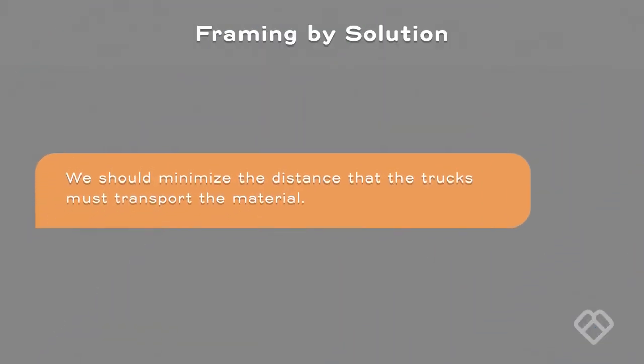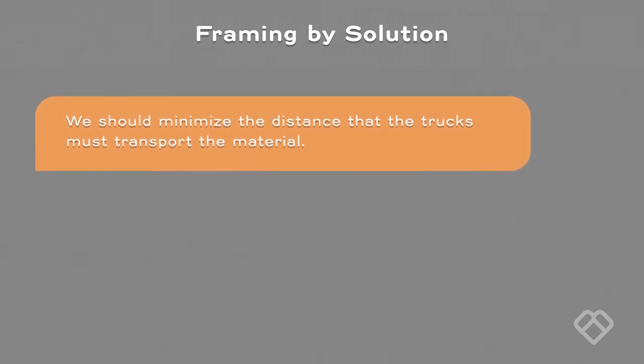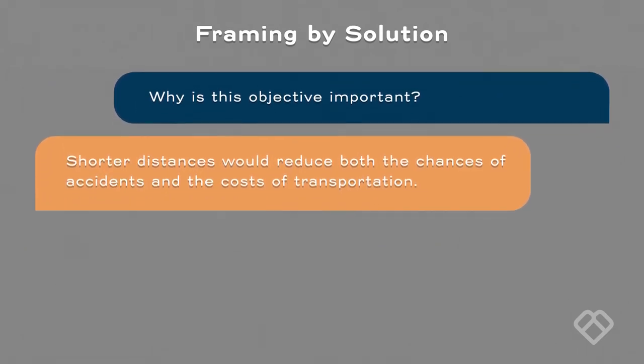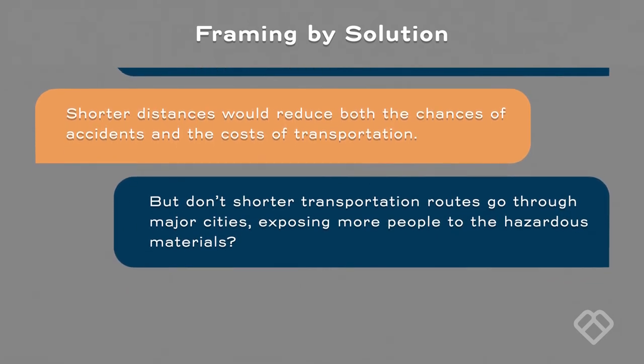Here's another example of framing by solution from the world of public policy, from decision scientist Ralph Keeney. Consider a dialogue between two public officials at an agency concerned with transporting hazardous materials to a distant waste dump. The first says: we should minimize the distance trucks must transport the material. The second asks: why is this objective important? Shorter distances would reduce accident chances and transportation costs. But don't shorter routes go through major cities, exposing more people to the hazardous materials? Stopping with the first objective — just minimizing transportation distance — doesn't deal with the underlying problem and may cause a greater problem by exposing more people to hazardous waste than a longer route avoiding cities. Once again, an example of framing the problem in terms of a particular solution rather than looking to the deeper roots of the problem.